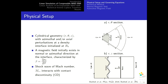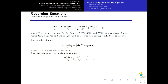The physical setup for the compressible MHD uses a cylindrical geometry with azimuthal and axial perturbation on the density interface, initialized at distance R0. A magnetic field initially exists either in the normal or azimuthal direction with strength beta, and a shockwave of Mach number M interacts with the contact discontinuity. The governing equations of compressible MHD are presented in conservative form, where W, F, G, and H are the solution vector and fluxes containing mass, momentum, magnetic field, and energy. F is the source term arising in cylindrical coordinates. The system is closed by the equation of state and the solenoidal constraint on the magnetic field.